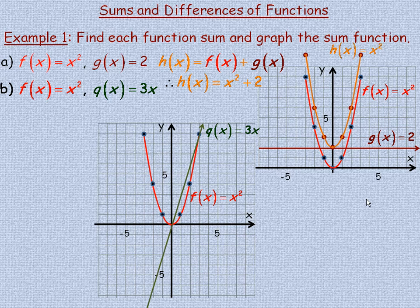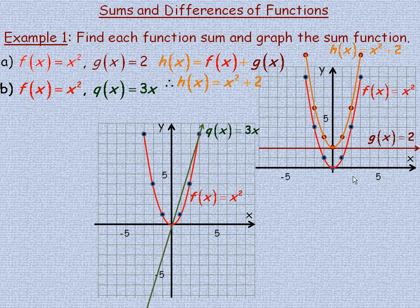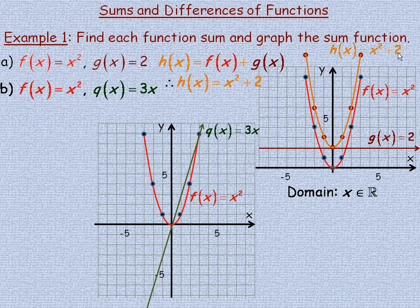That's what h of x equals x squared plus 2 looks like. The original g of x extends forever to the right and left, and so does x squared, so the domain for both is the entire set of real numbers. Therefore the domain for the new function is still the entire set of real numbers — there's no value you cannot substitute for x, square it, and add 2 that makes it undefined.